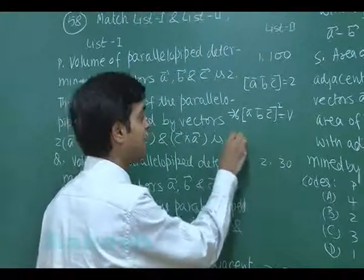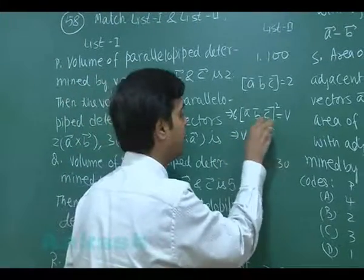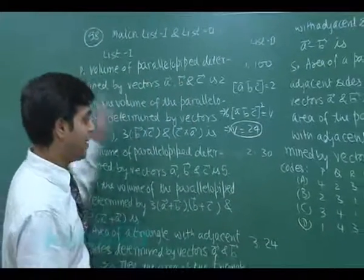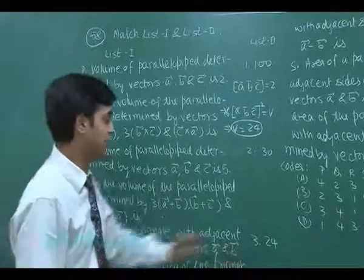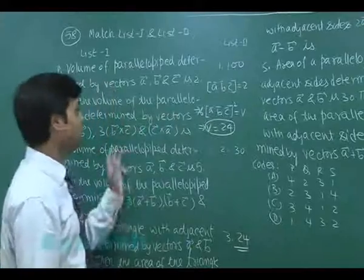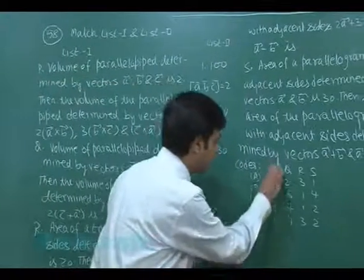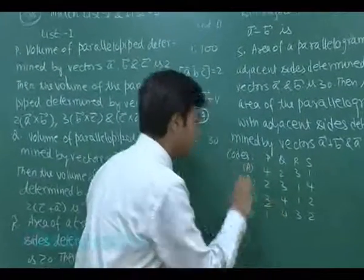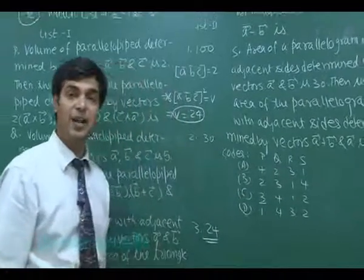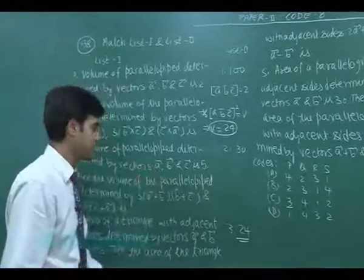So volume V comes out as 6 × (2)² = 24. The correct answer for the first one is 3, matching P to 3. From this alone we can directly conclude the correct answer is option C. Let's move to the next part.